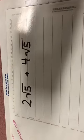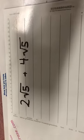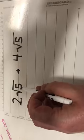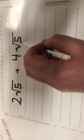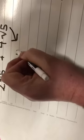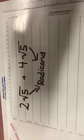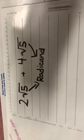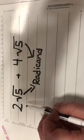These can be added because certain things are the same. First of all, these can be added because we have a square root of five and a square root of five. These numbers right here are what we call the radicand. The radicand.